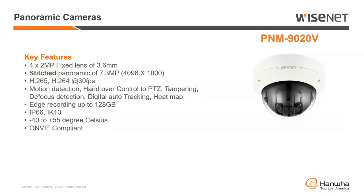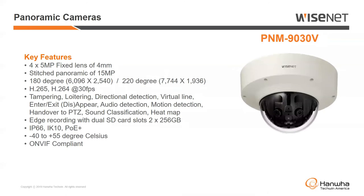Hanwha has two different models today. The PNM-9020V is an outdoor vandal-rated camera with four 2-megapixel sensors, stitched together for 7.3 megapixels. It's ONVIF compliant so it can work in pretty much any VMS, and the VMS sees it as one camera, one device. Then we have the newer PNM-9030, higher resolution with four 5-megapixel heads providing a stitched output of 15 megapixels. It also has the ability to change the field of view — either 180 degrees or up to 220 degrees. It's got a variety of analytics built in and other great features for inside a building or mounted on a corner of a building to get that ultra-wide angle view.